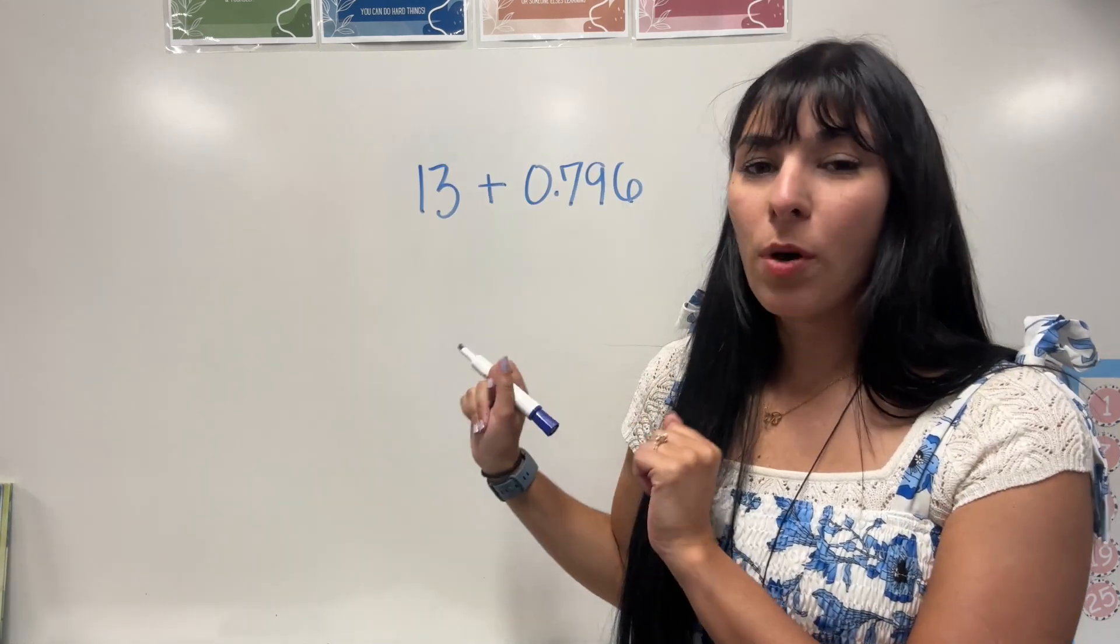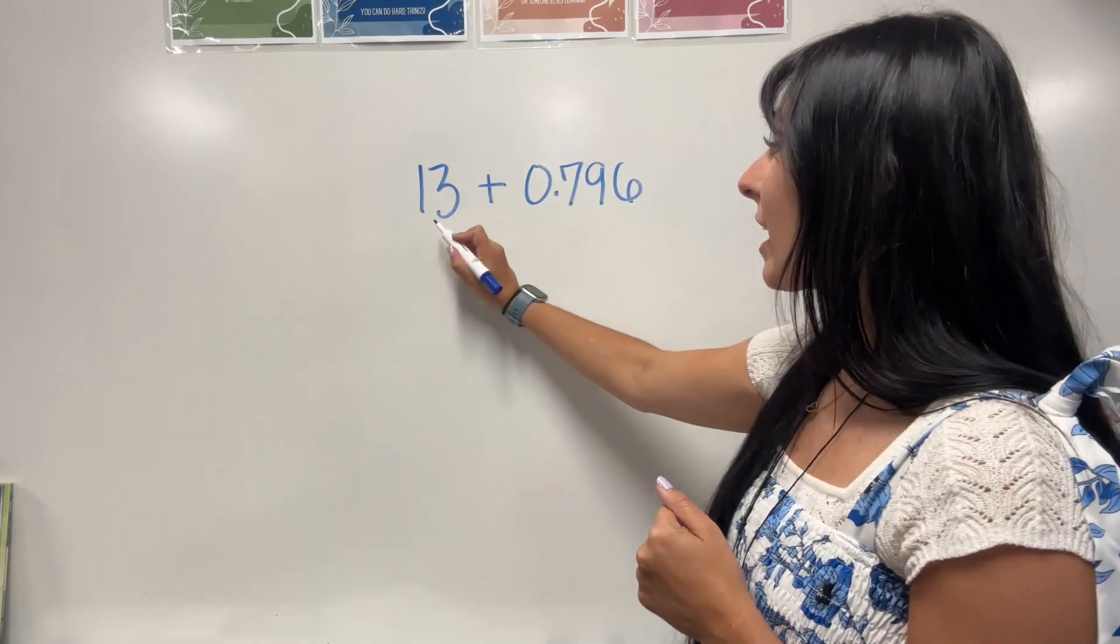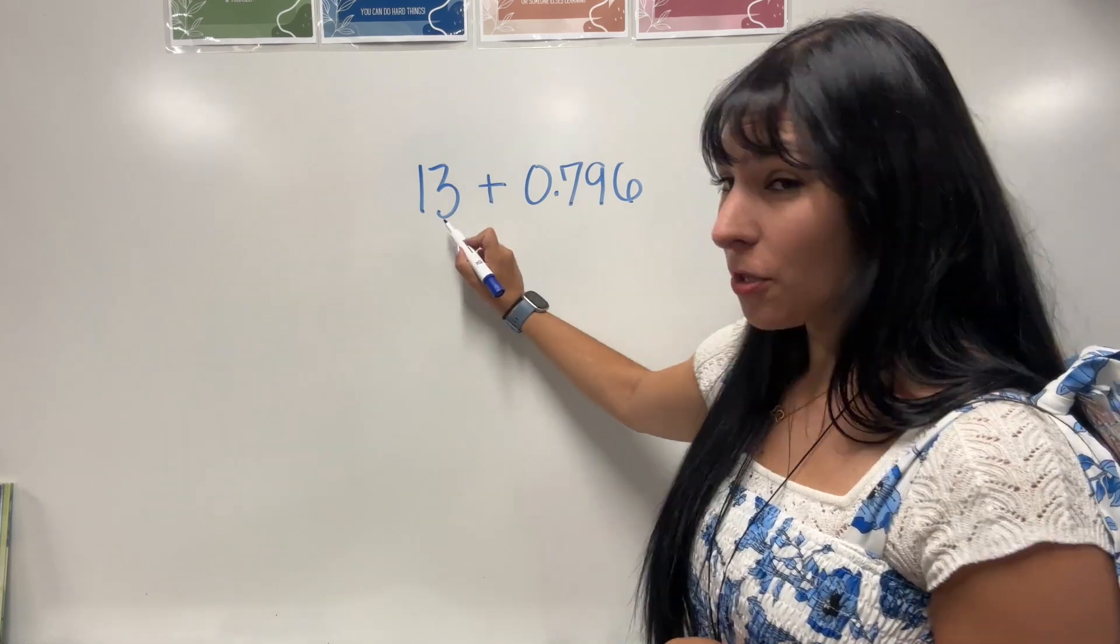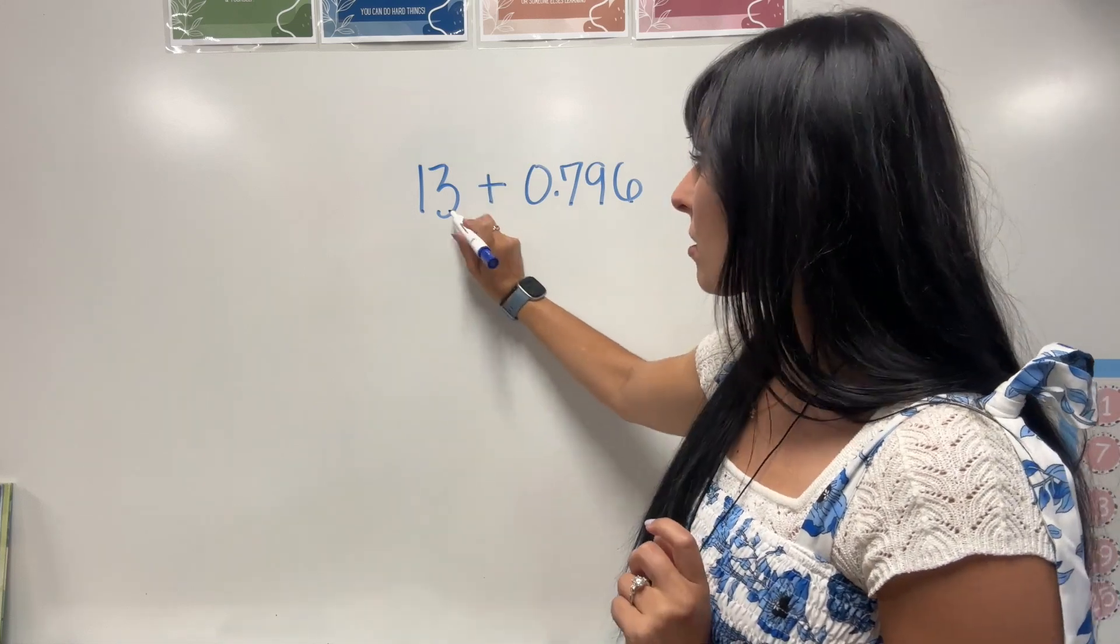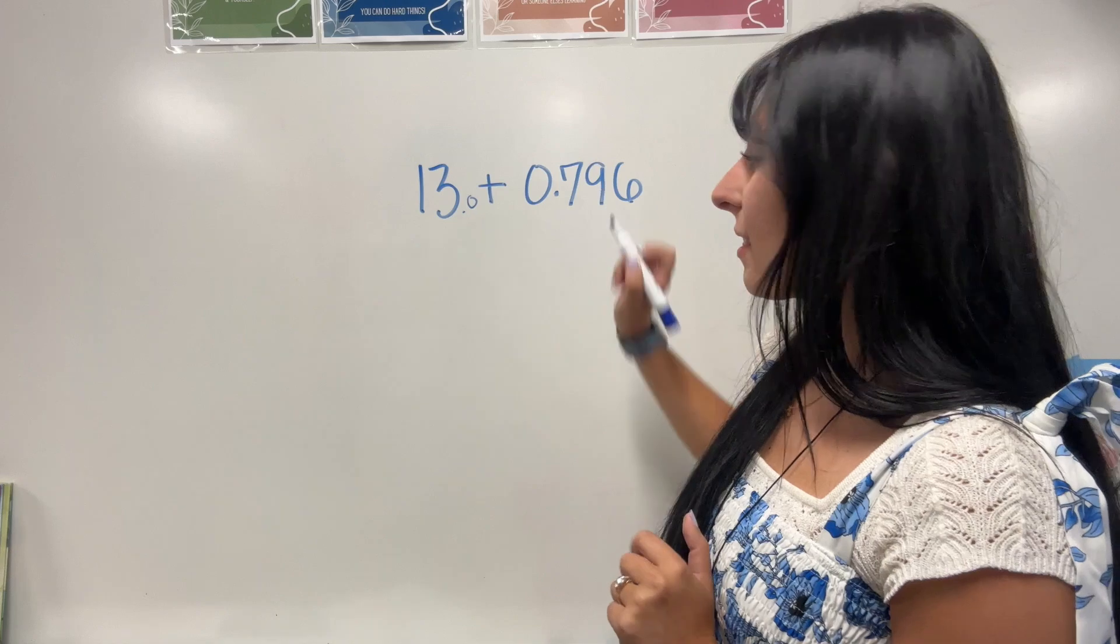Next, for our next problem, I wanted to write it horizontal so we can really see how we line up those decimals. So we're going to have 13 plus 0.796. Now this 13 doesn't have a decimal, but all whole numbers do. It's just a very sneaky decimal at the end. So let's go ahead and line that up with this one.